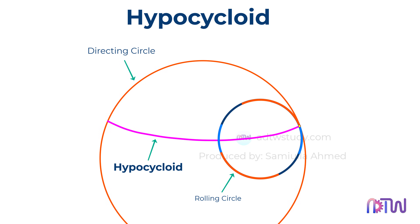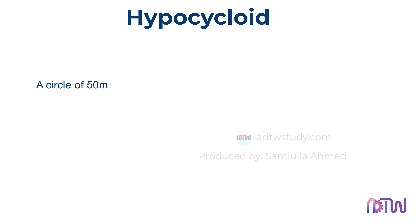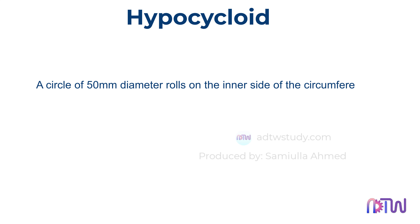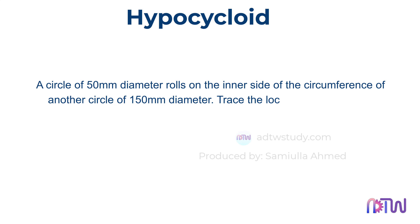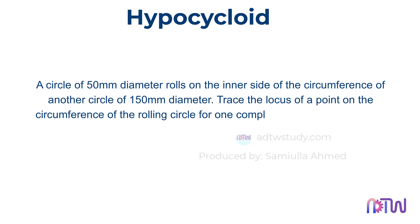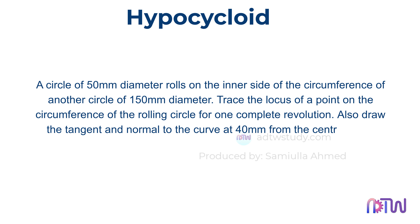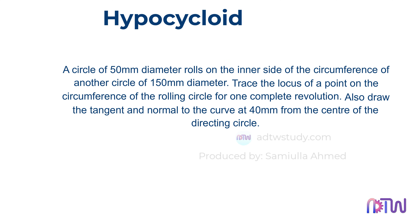To do so, we will consider an example question. A circle of 50 mm diameter rolls on the inner side of the circumference of another circle of 150 mm diameter. Trace the locus of a point on the circumference of the rolling circle for one complete revolution. Also, draw the normal and tangent to the curve at 40 mm from the center of the directing circle.